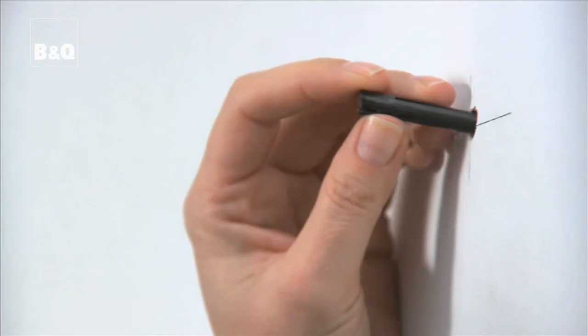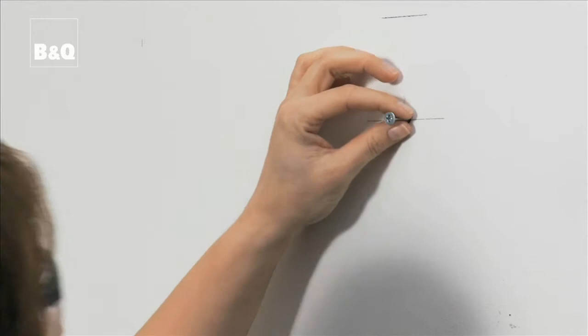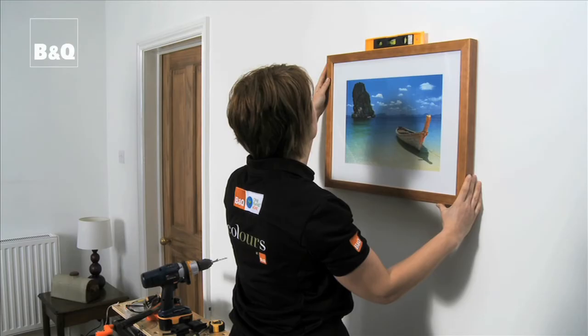Now insert the wall plug. You can gently use a hammer if necessary and then screw in the hook screw. Offer up the picture to the wall and make sure it's properly sitting on the fixing. Finally, use a spirit level to make sure it's straight.